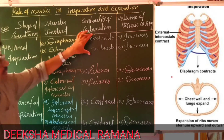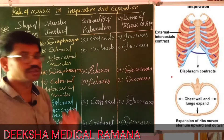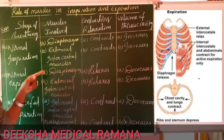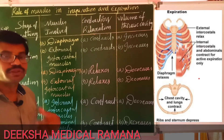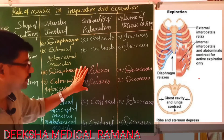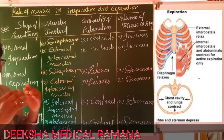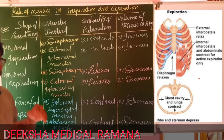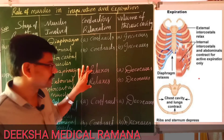What muscles are involved and what changes occur — as a result of that, air enters into the lungs. Coming to normal expiration: during normal expiration, the diaphragm and external intercostal muscles are relaxed — they come to the normal position. The flattened diaphragm comes back to its dome shape, and the external intercostal muscles also come to the relaxed state. Both the diaphragm and external intercostal muscles come to the relaxed state.